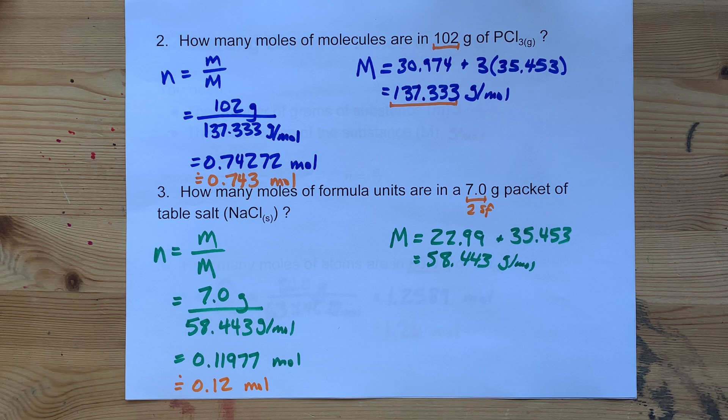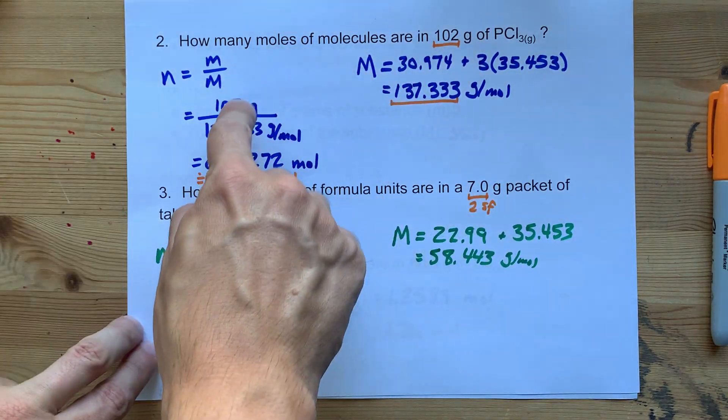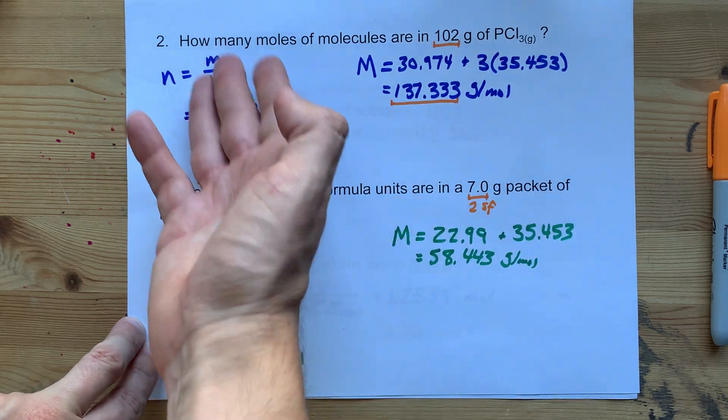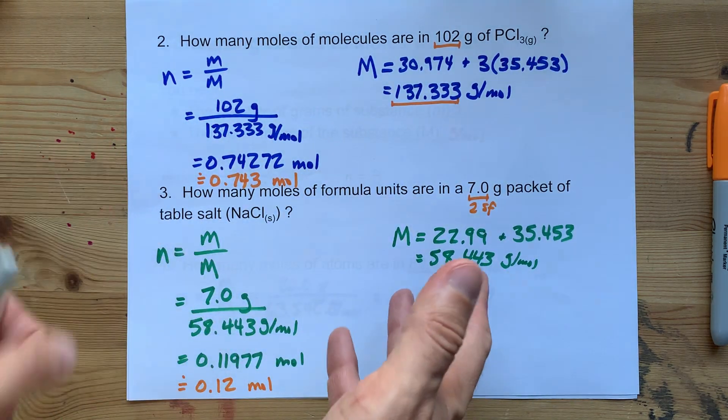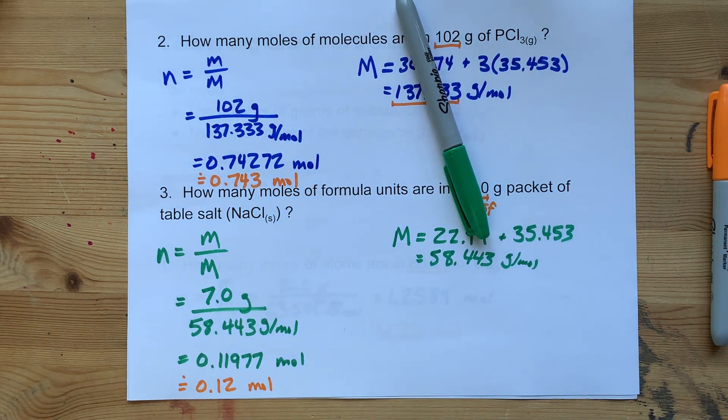But you didn't come here for significant figures. You came here for converting grams into moles. The answer is divide by molar mass. Easy peasy, lemon squeezy. Best of luck.